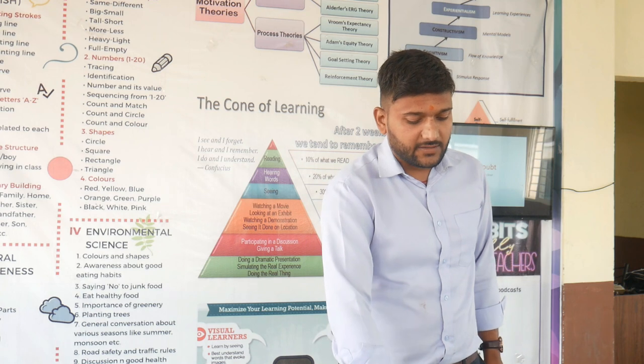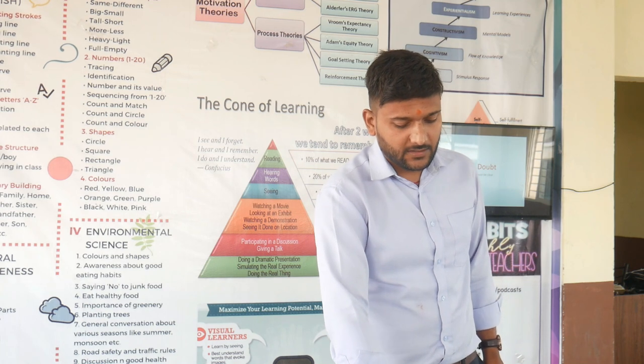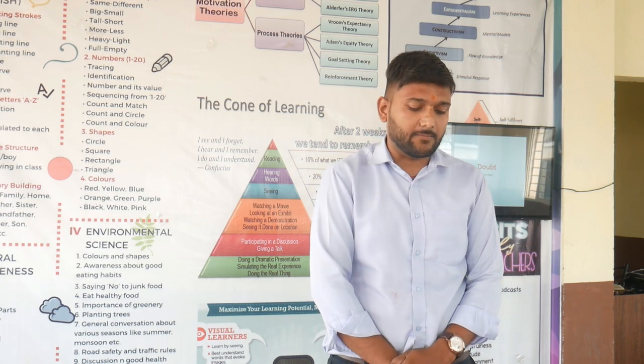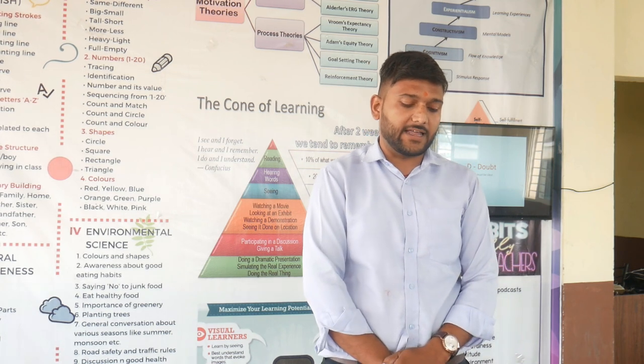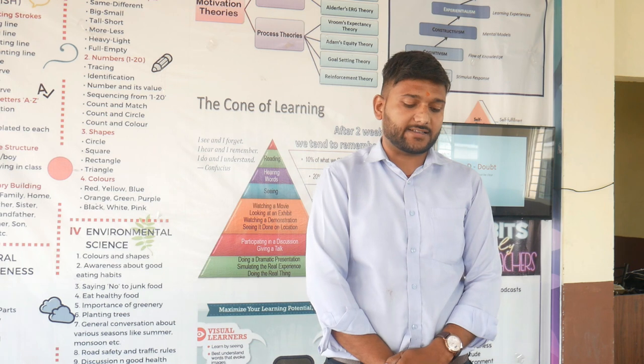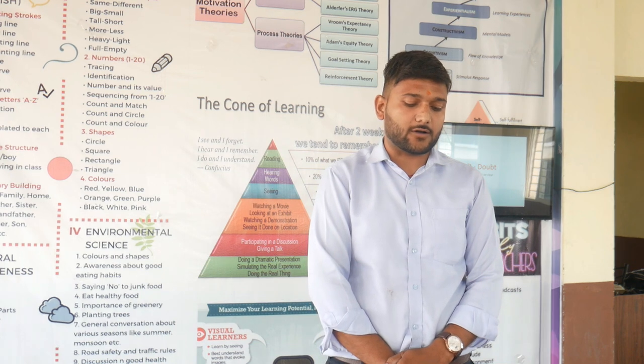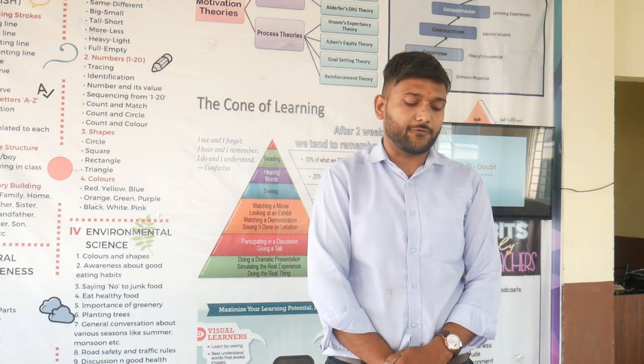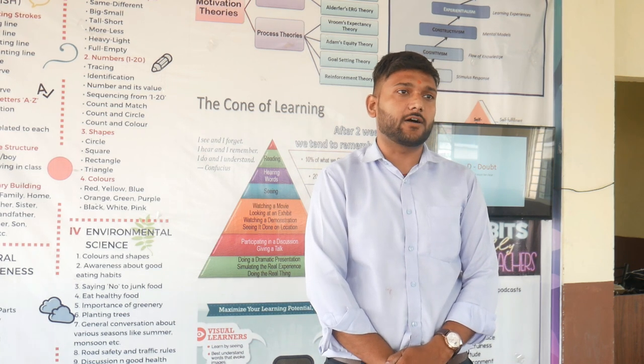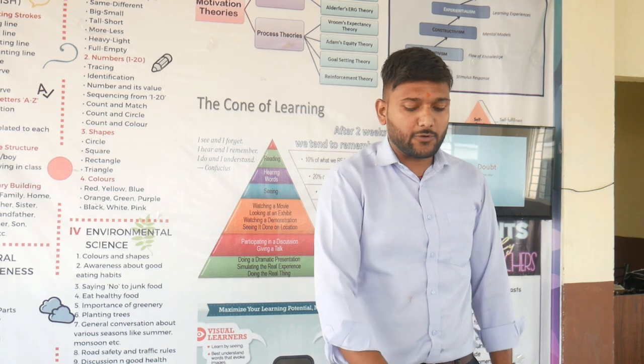C is for catenation. Catenation is the binding of an element to itself via covalent bonds, forming a chain or ring.